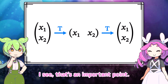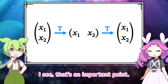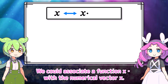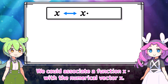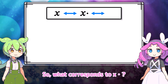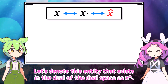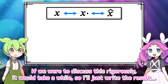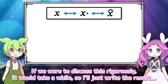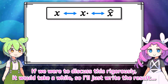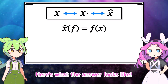I see, that's an important point. We could associate a function x·dot with the numerical vector x. So what corresponds to x·dot? Let's denote this entity that exists in the dual of the dual space as x-hat. If we were to discuss this rigorously it would take a while, so I'll just write the result.